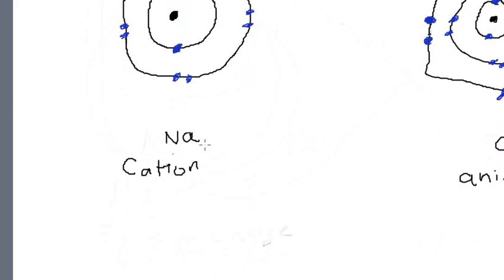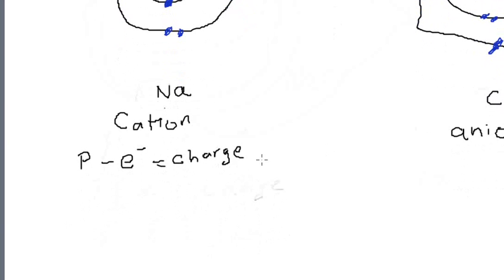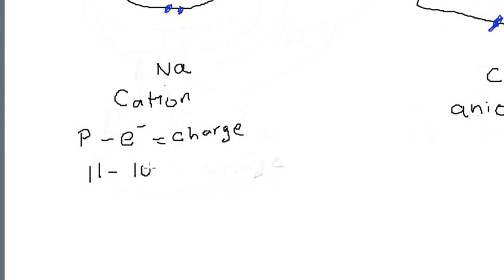To find the charge, you take the number of protons and subtract the number of electrons. Sodium has 11 protons, and because it lost one electron, it now has 10 electrons. 11 minus 10 is 1, so sodium has a charge of +1. When it gets that charge, that is when you call it a cation — if it doesn't have the charge, you can't call it a cation yet.